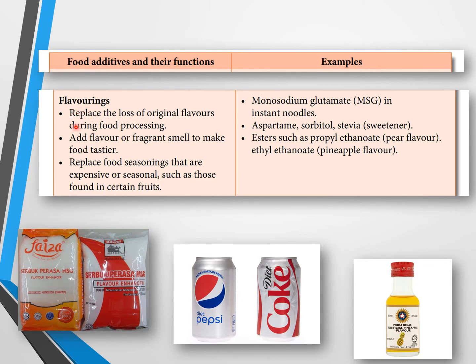The third type is flavoring. Flavoring replaces the loss of original flavors during food processing, adds flavor or fragrant smell to make food tastier, and replaces expensive or seasonal food seasonings — such as durian flavor, which is only available during durian season. Synthetic flavoring replicates these tastes. MSG, found in products like Faiza and Adabi, is also used in instant noodles.